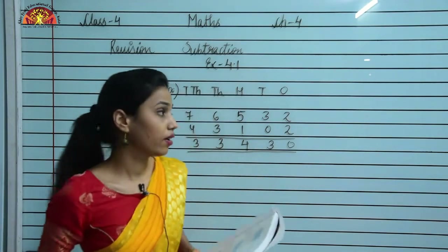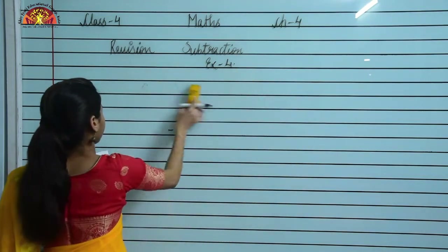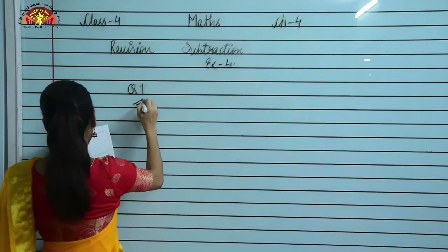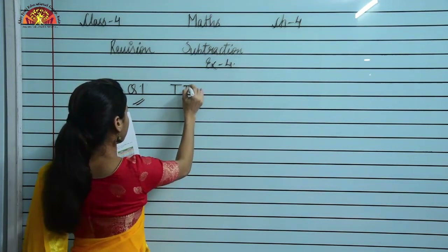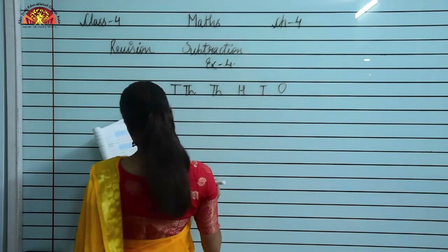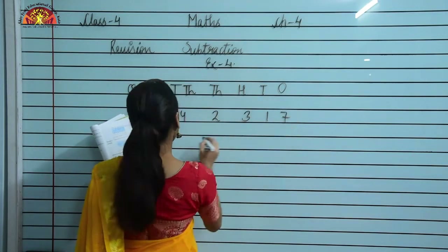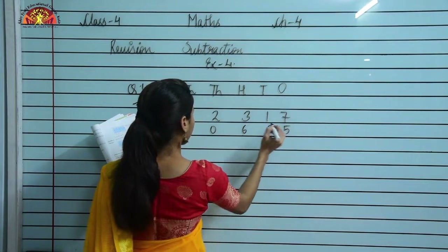Now let us start exercise 4.2. Question number 1 is: subtract the following numbers. We have the place value columns 10,000s, 1,000s, 100s, 10s, and 1s. The problem is 42,317 minus 10,625.